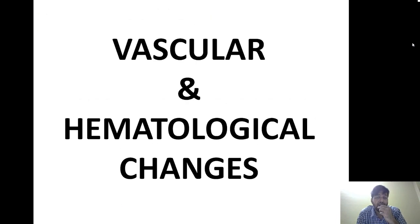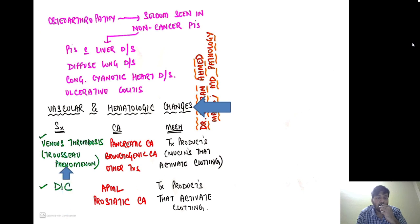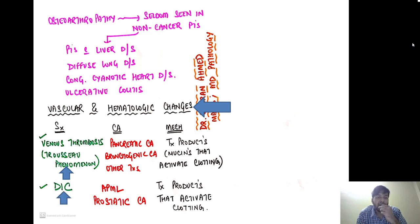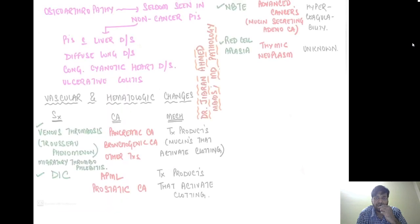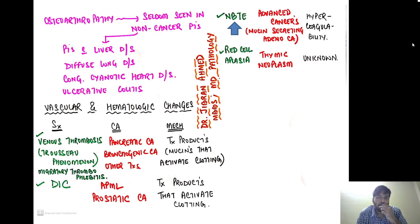Vascular and hematological changes: first, venous thrombosis — also called Trousseau's phenomenon or migratory thrombophlebitis — seen in pancreatic carcinoma and bronchogenic carcinoma, induced by tumor-derived mucins activating clotting. Second, DIC (disseminated intravascular coagulation), seen in APML (acute promyelocytic leukemia) and prostatic carcinoma, also from tumor products activating clotting. Third, non-bacterial thrombotic endocarditis (NBTE), seen in advanced mucin-secreting adenocarcinomas causing hypercoagulability. Finally, red cell aplasia is present in thymic neoplasms — mechanism unknown.